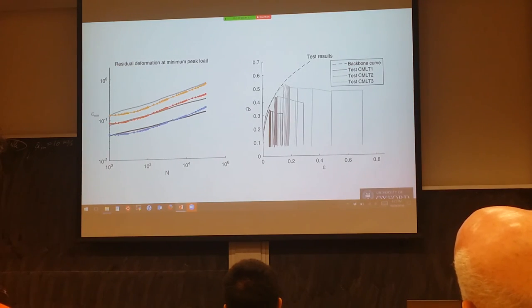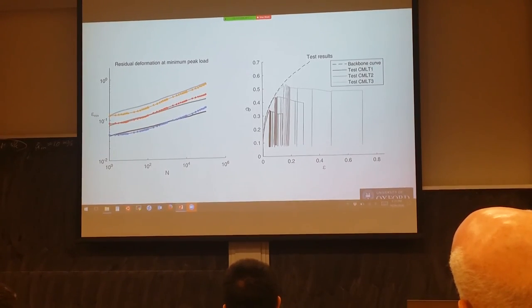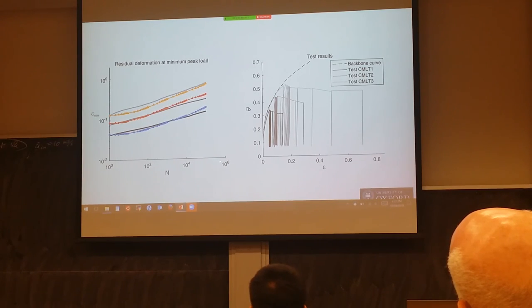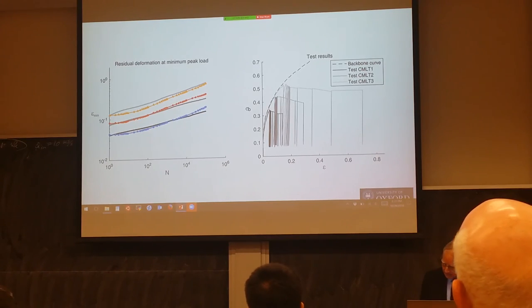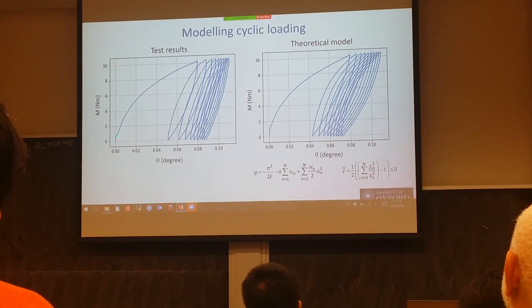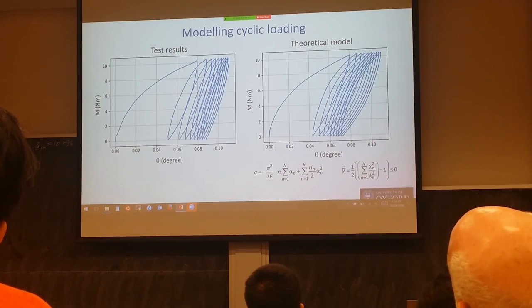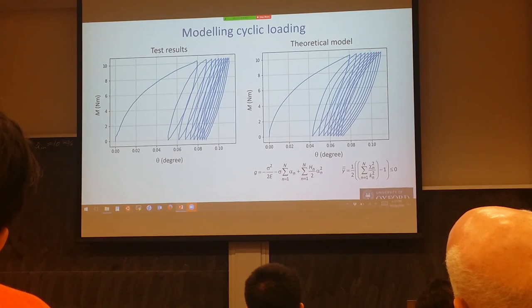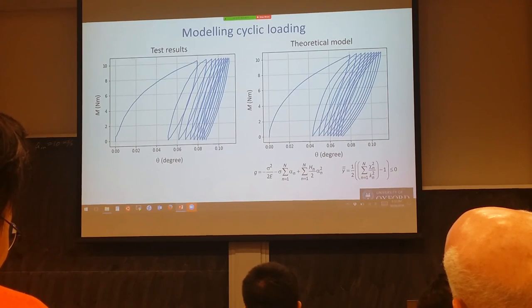We've had an extensive program subjecting piles to different amplitudes of loading and here's the accumulation of the ratcheting effect over many cycles — up to about 100,000 or more cycles in laboratory tests. We're also doing work on modelling that ratcheting problem. Here's a test on the left-hand side where we apply a load followed by 10 cycles, and on the right is the theoretical modelling of that same test — showing that our modelling approach is managing to capture the additional displacement accumulated with each repeated cycle.